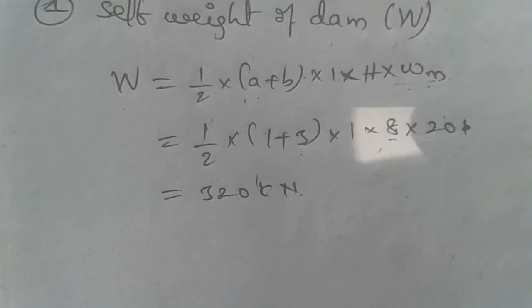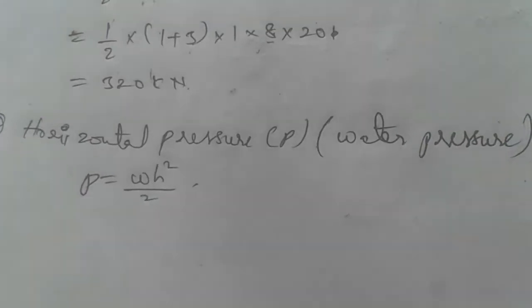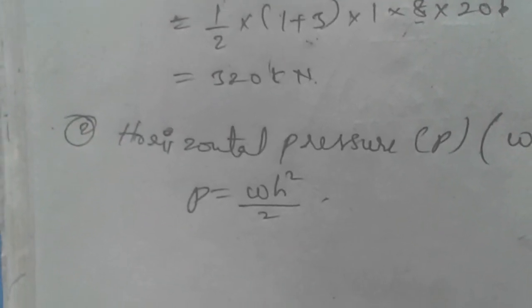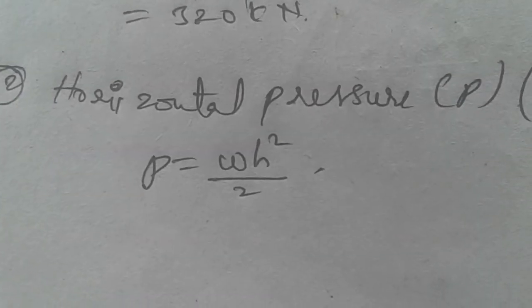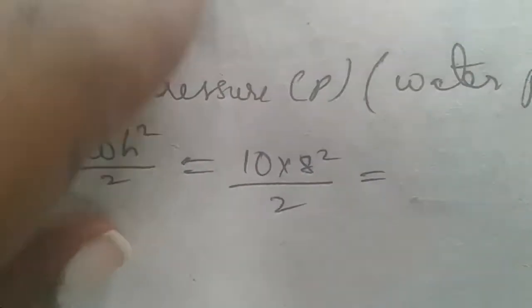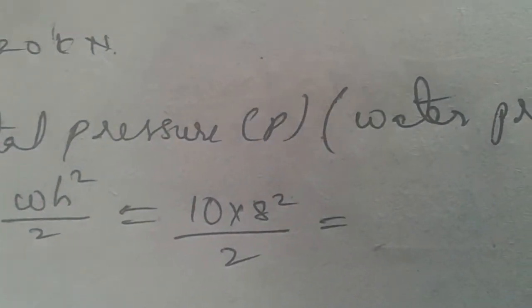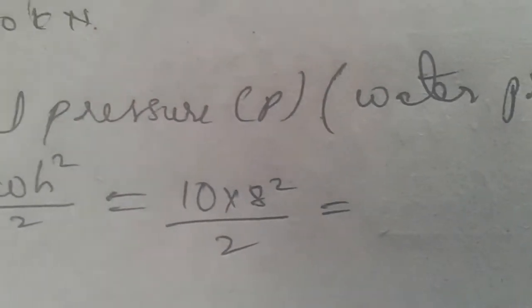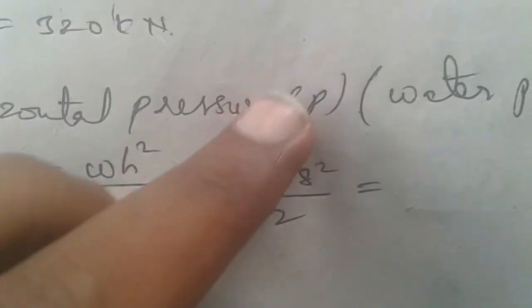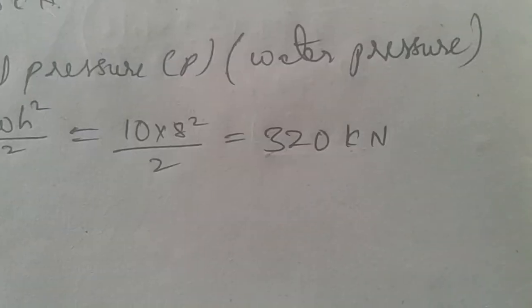The next step is horizontal pressure or water pressure. We have to follow P equals W times H squared by 2. So W is 10 kilonewtons and H is 8. Why? Because the top level of water is full in the dam, so we take H as 8 meters.